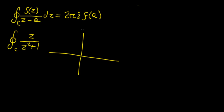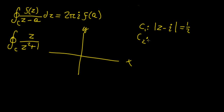In the complex plane, with y-axis and x-axis, we define three curves. Curve 1 is the circle |z - i| = 1/2. Curve 2 is |z + i| = 1/2. And C3 is |z| = 2.